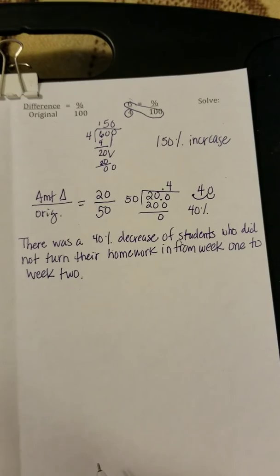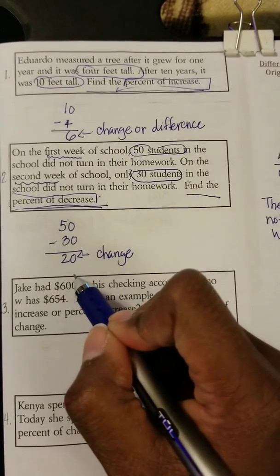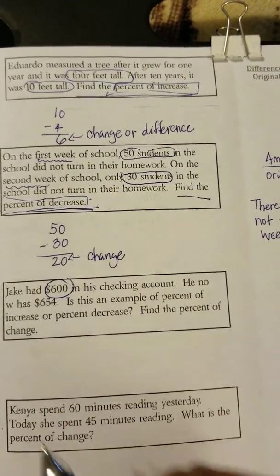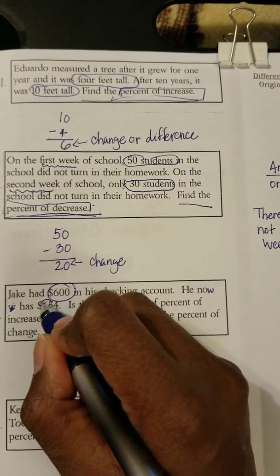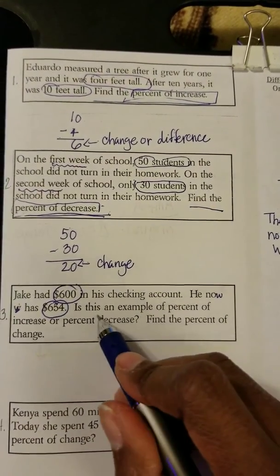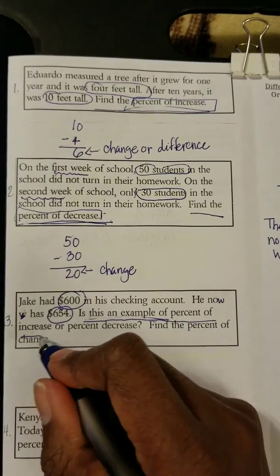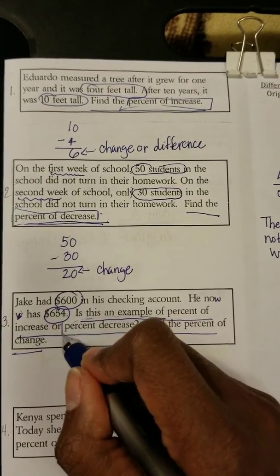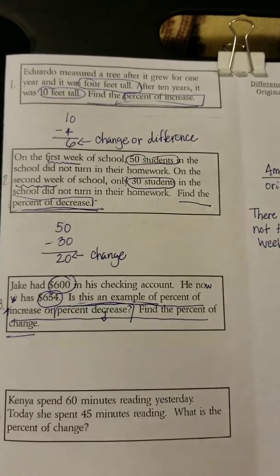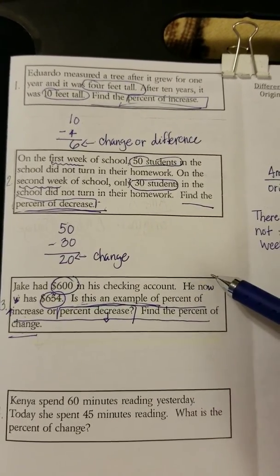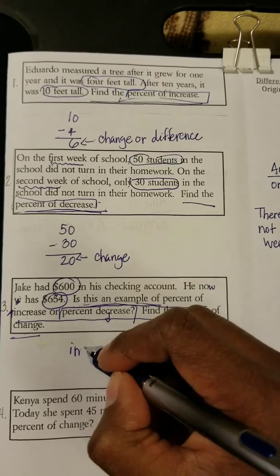Moving on to example number three: Jake has $600 in his checking account — circle the 600. He now has $654. Is this an example of percent increase or decrease, and what is the percent of change? Just by looking at it: he had $600 and now has $654, so we know it increased. This is an increase.